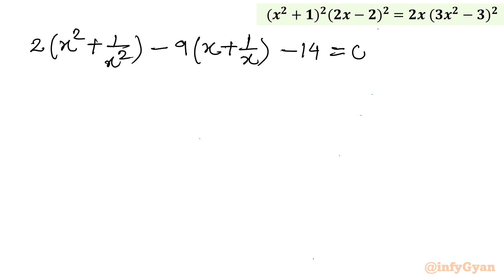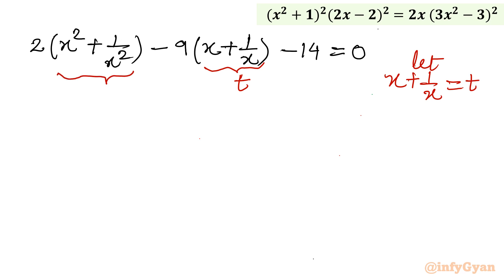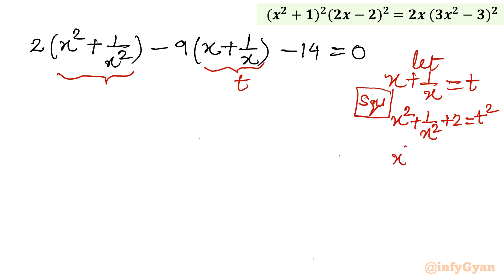Now let x + 1/x = t. To get x² + 1/x², we square both sides: x² + 1/x² + 2 = t², so x² + 1/x² = t² - 2. We substitute this into the equation.